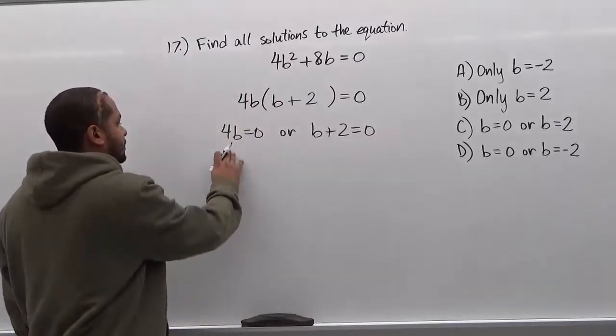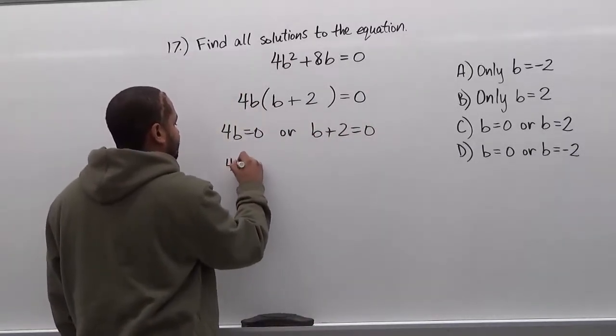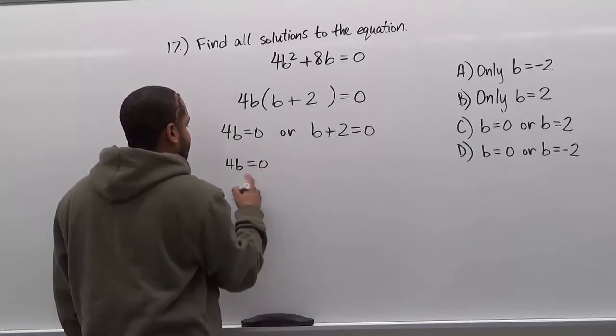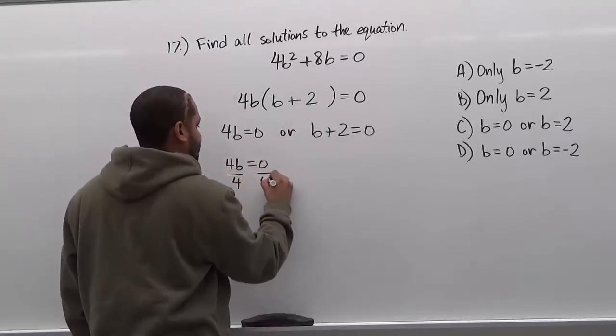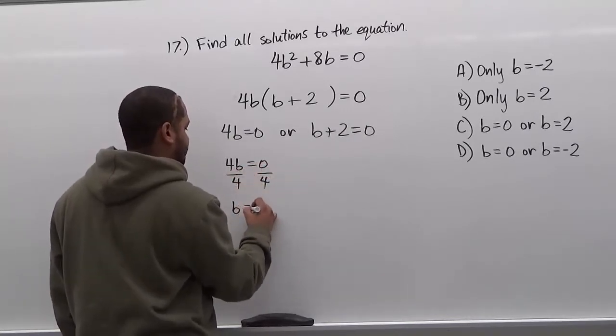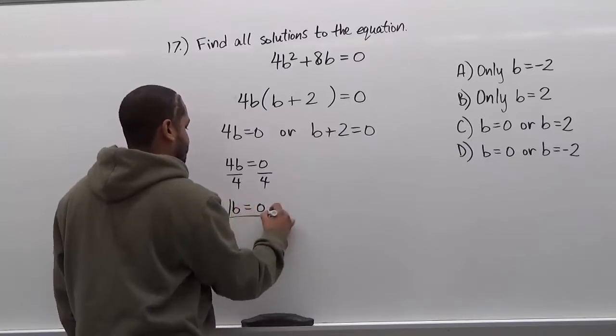Now to solve this one on this side, all we have to do is divide 4b and zero by 4. And we isolate our b value and we get b is equal to zero. There's our first solution.